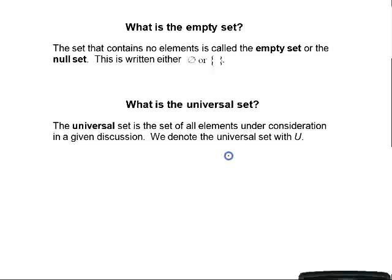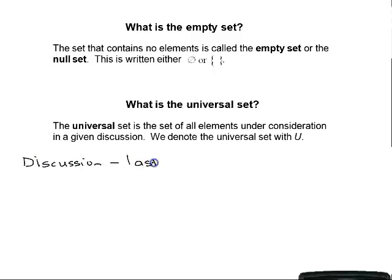What is the universal set? The universal set is the set of all elements under consideration in a given discussion. We denote the universal set with capital U. For example, if our discussion was about the last digit of your phone number, our universal set would be the possible last digits of phone numbers.